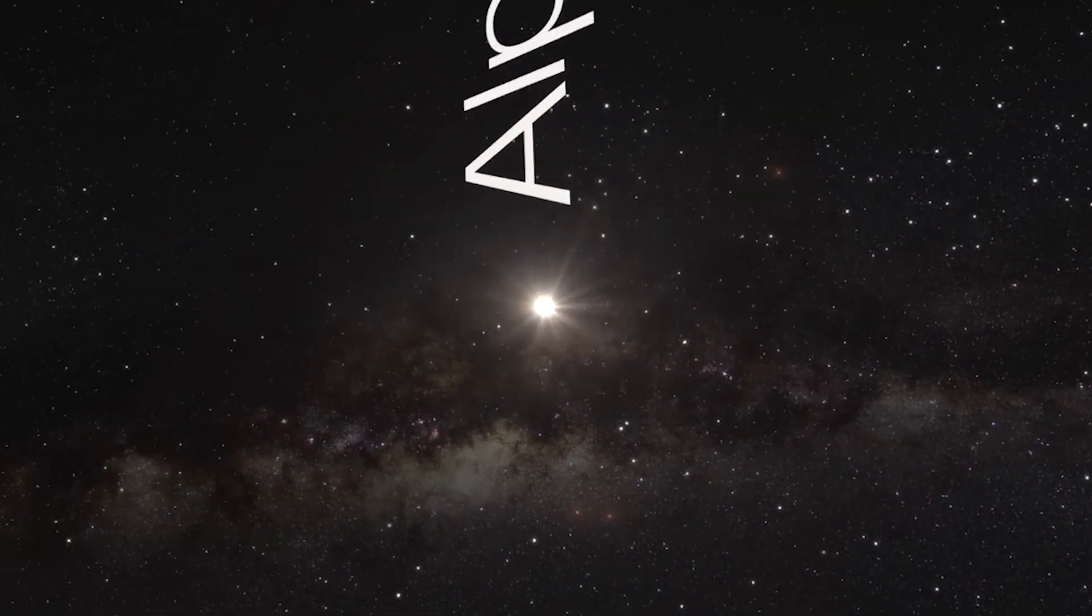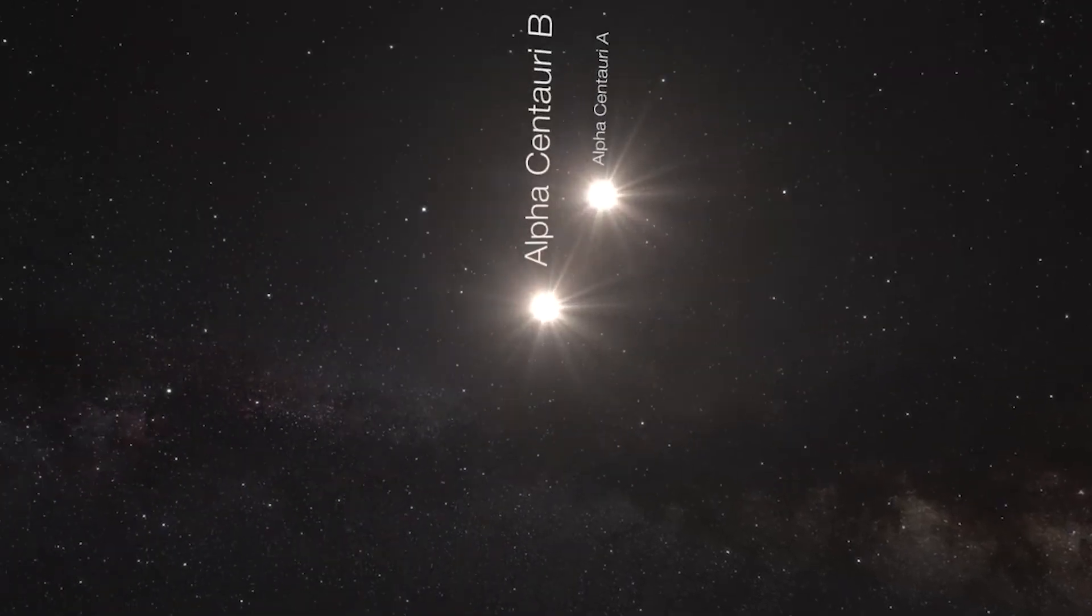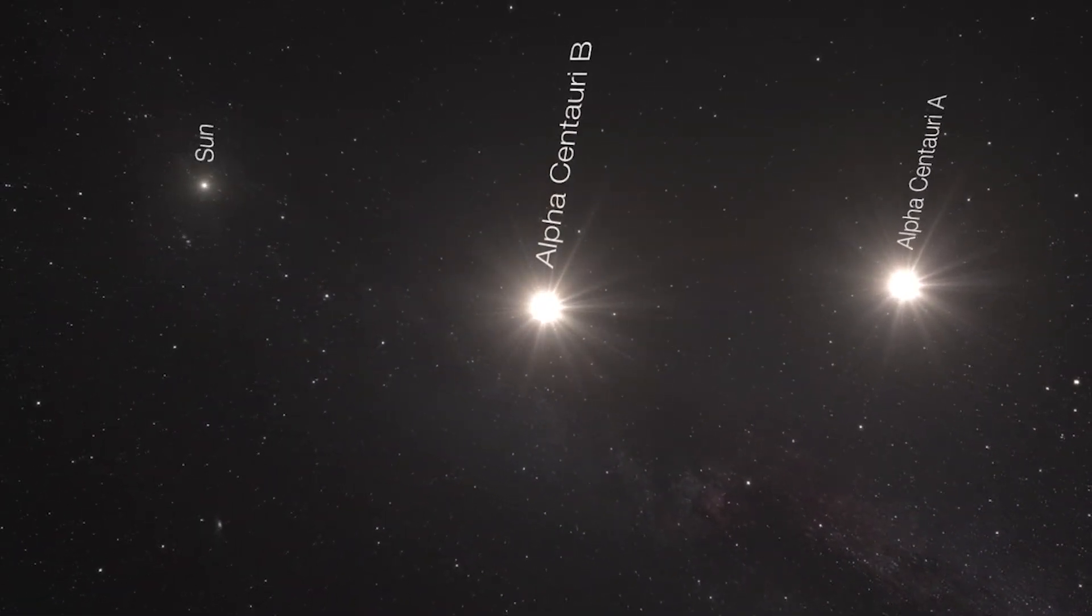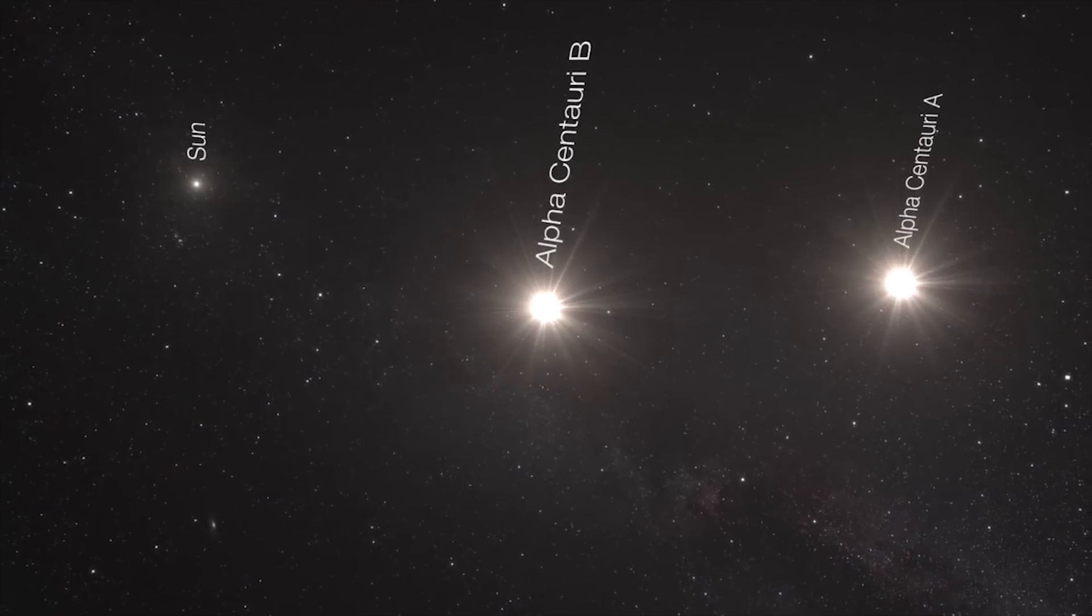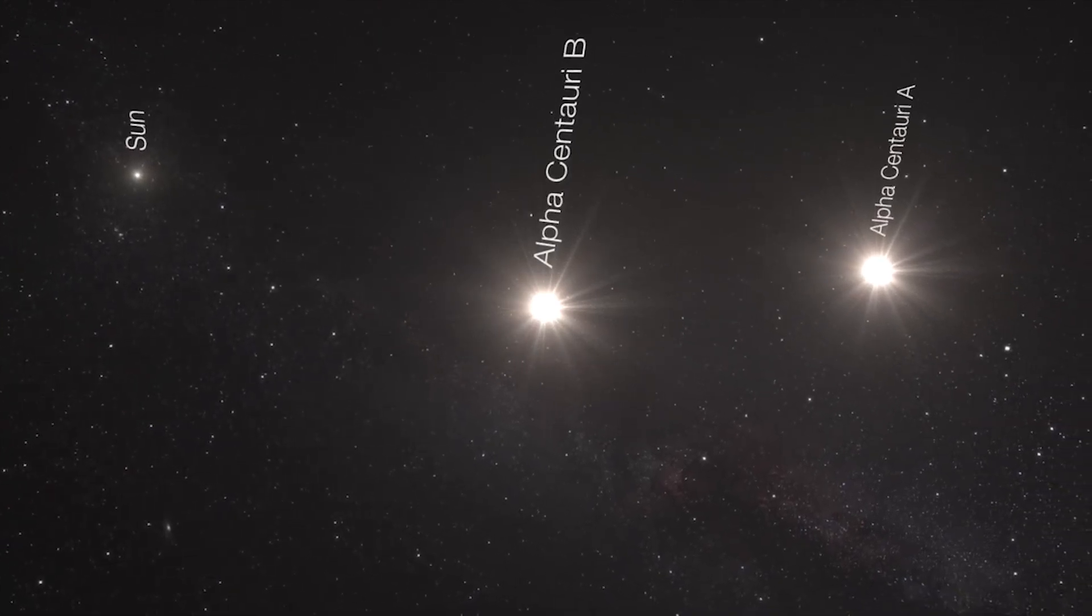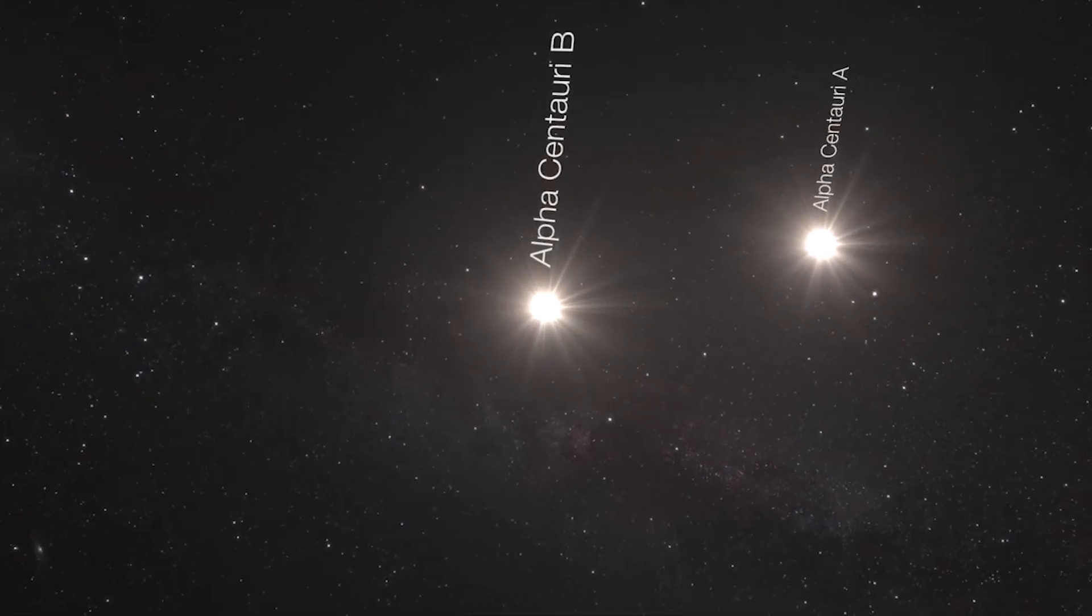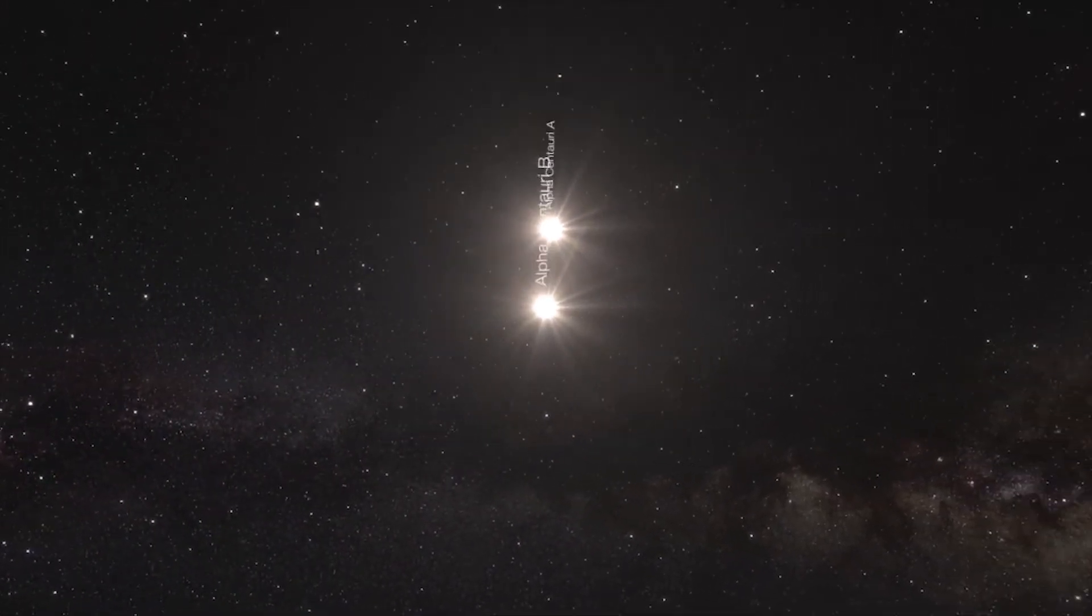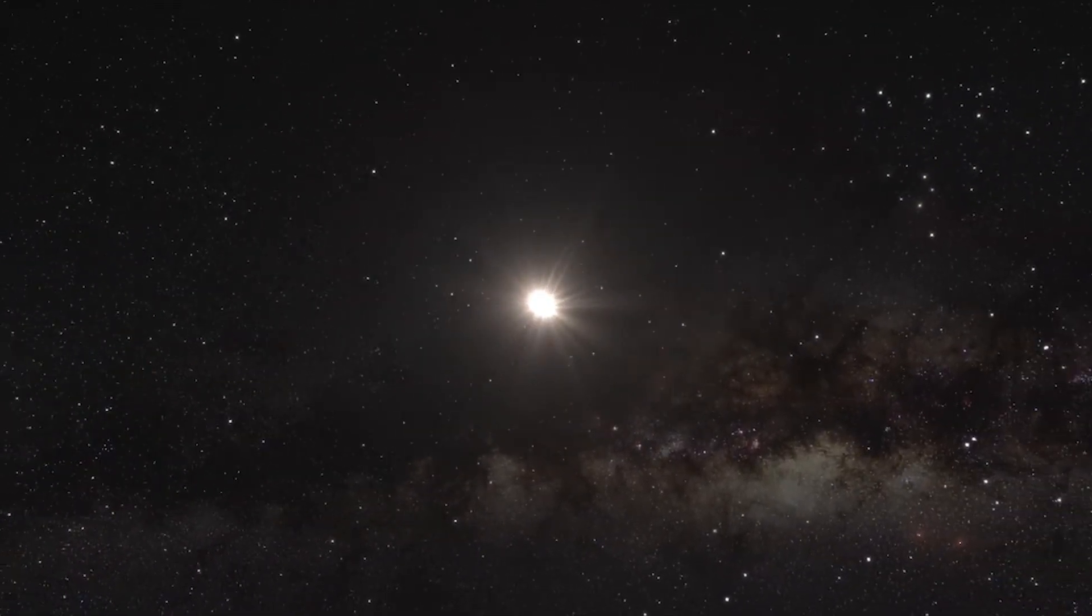The signal comes from a triple star system composed of the binary pairs Alpha Centauri A and B and Alpha Centauri C, also known as Proxima Centauri. Alpha Centauri A and B, the two stellar companions, are relatively close to each other and quite similar to the Sun.